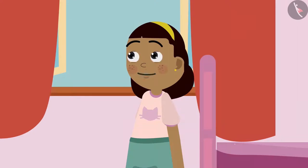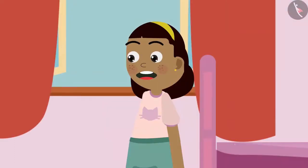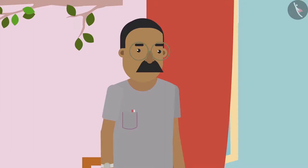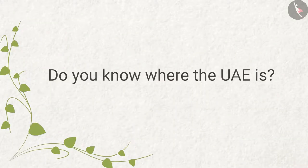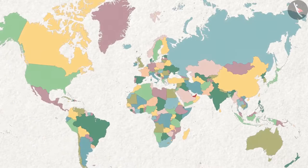Ziya says: 'Dad, you didn't tell me anything about Abu Dhabi!' Dad replies: 'Ziya, what do you want to know?' Ziya asks: 'Dad, where is Abu Dhabi?' Her father answers: 'Abu Dhabi is in the UAE — the United Arab Emirates.' He then shows a map of the world and asks if she knows where the UAE is.